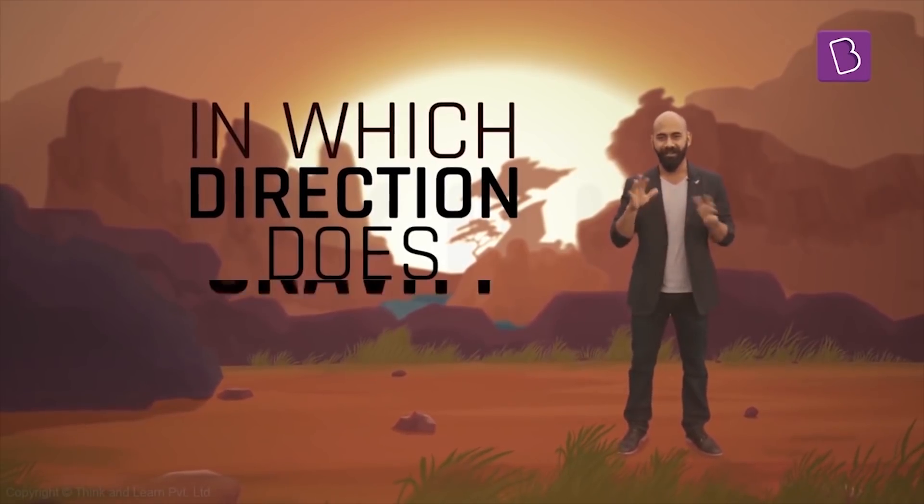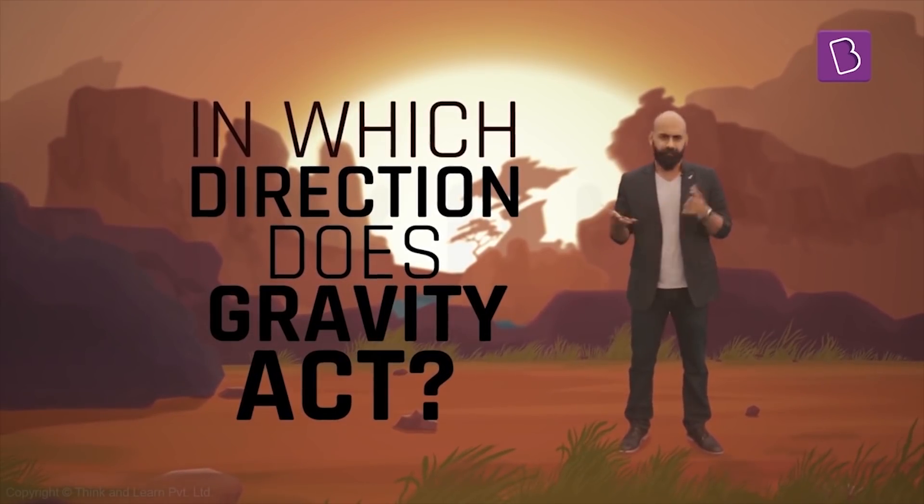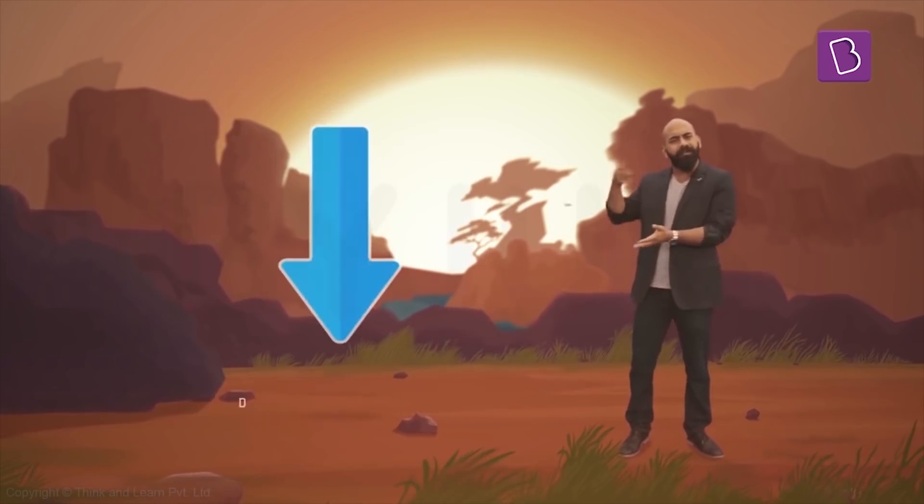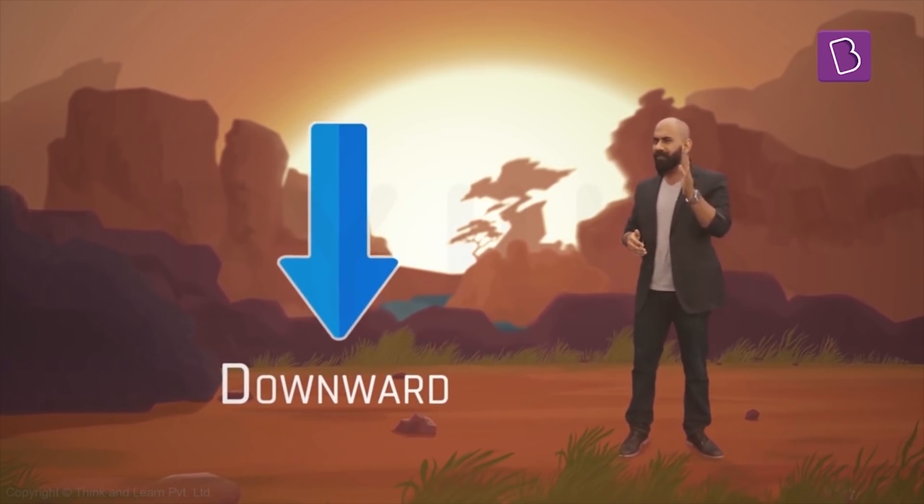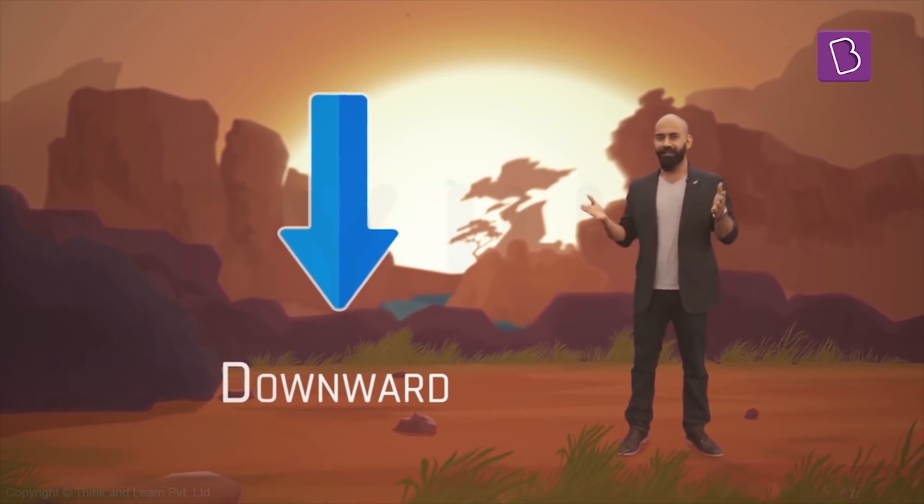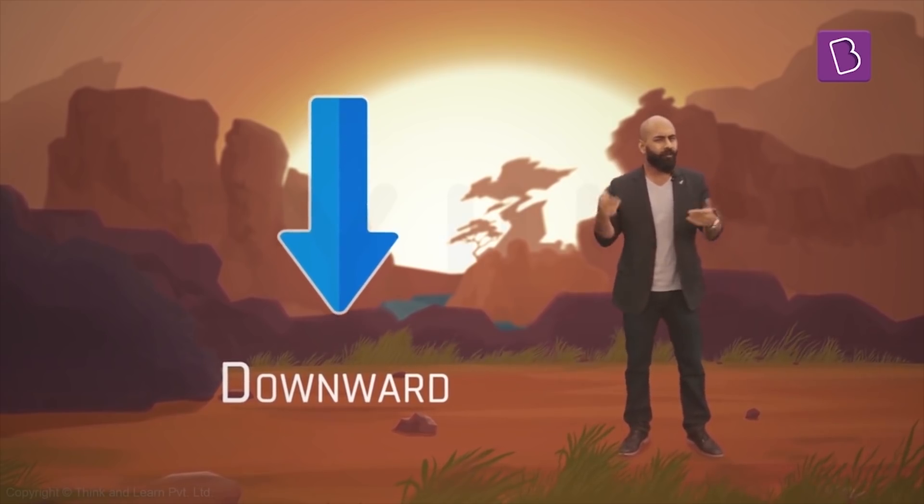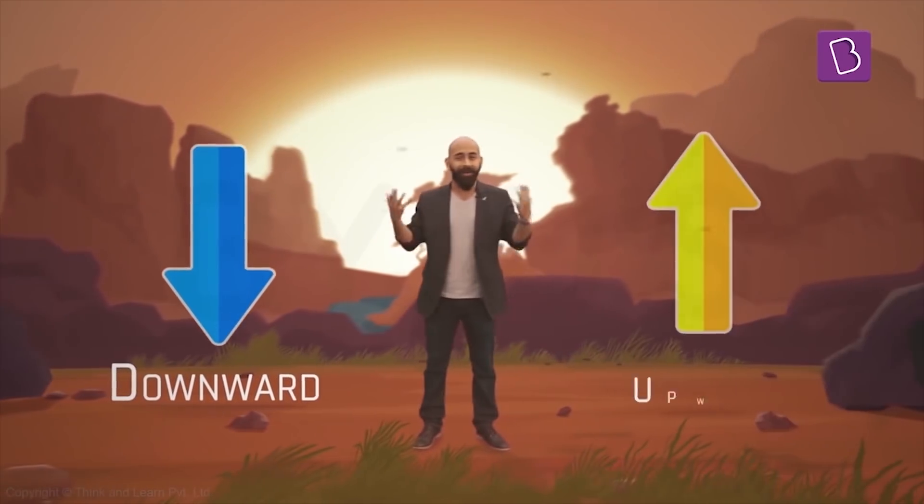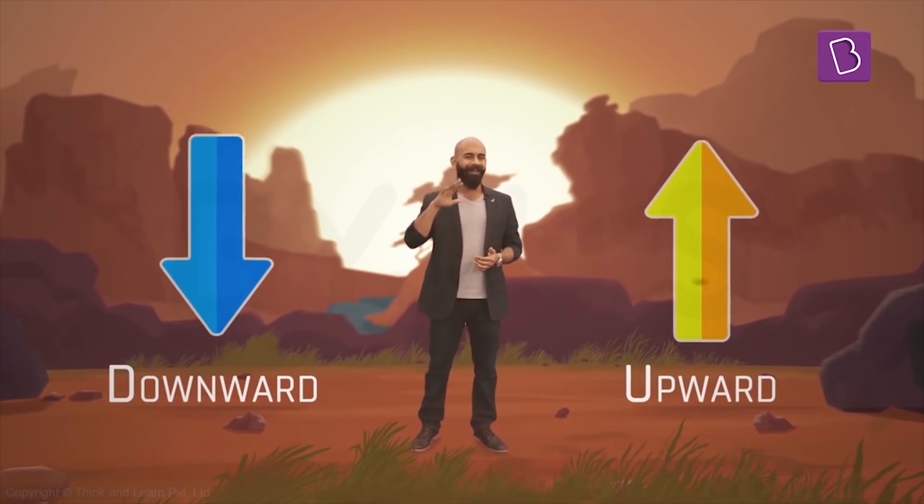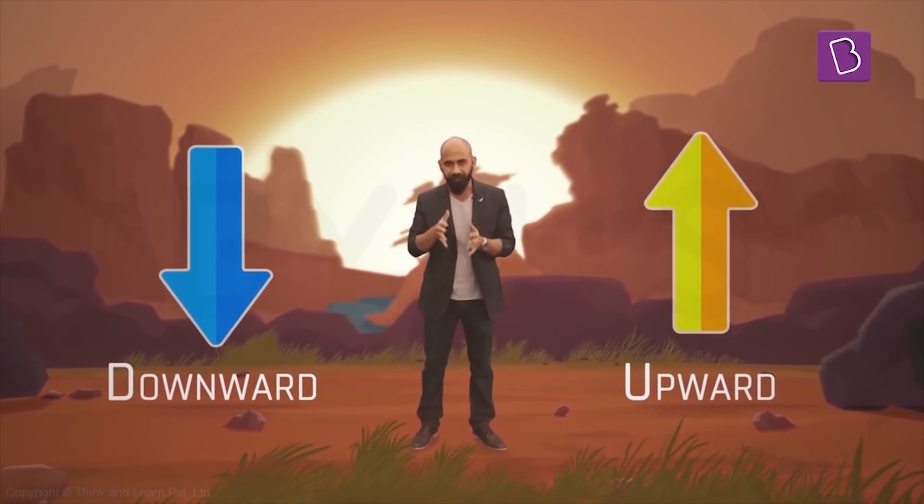In which direction does gravity act? Immediately you'll say, of course, it acts downward. But what does downward mean exactly? Downward means toward the ground, right? And upward means in the opposite direction. Think about it, is that actually true?